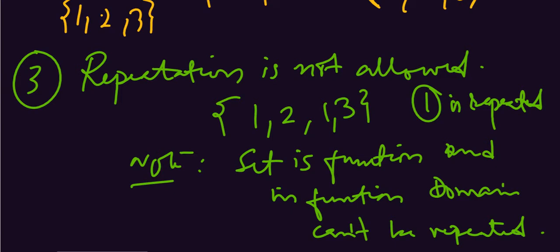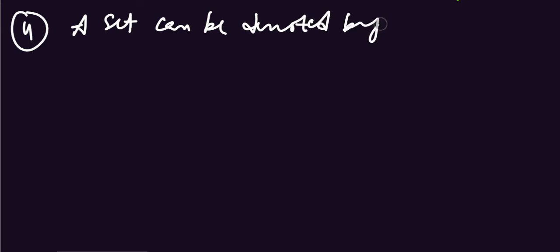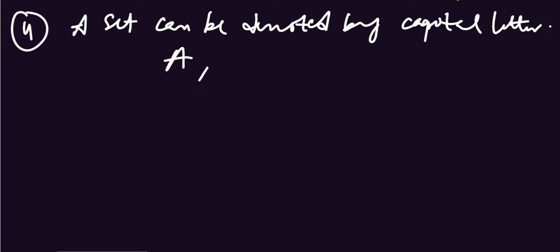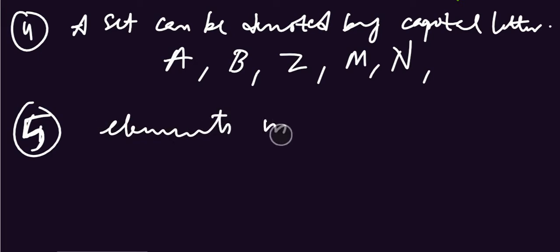The 4th point is: a set is denoted by capital letters of the English alphabet, such as A, B, M, N. The 5th point is: elements can be expressed in small letters.